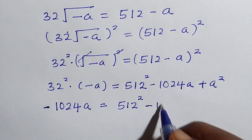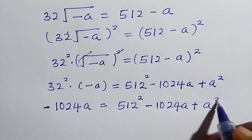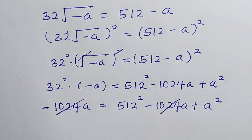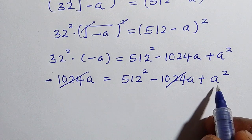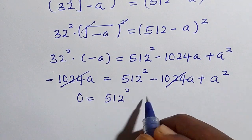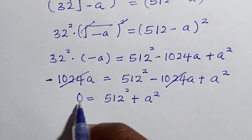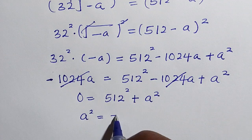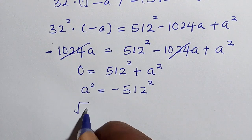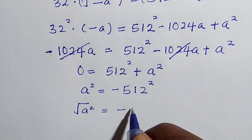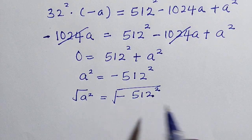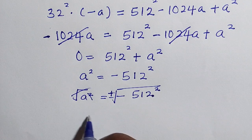We get negative 1024a equals 512 squared minus 1024a plus a squared. Let's take a look: both sides have negative 1024a with opposite signs, so they cancel each other. We are left with zero here, and a squared and 512 squared remain, giving us zero equals 512 squared plus a squared.